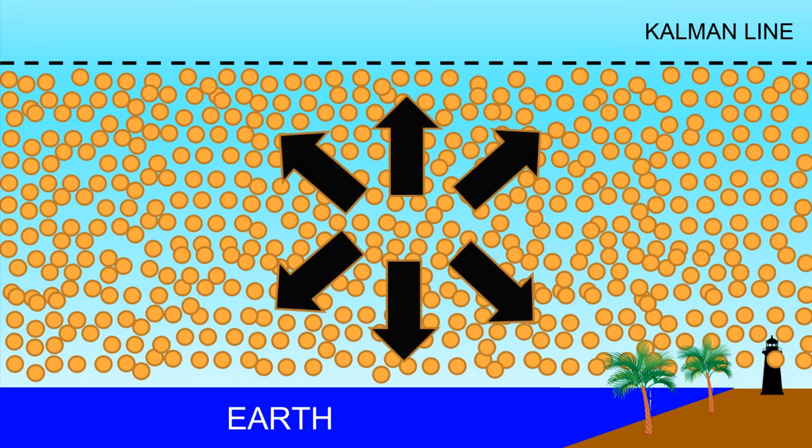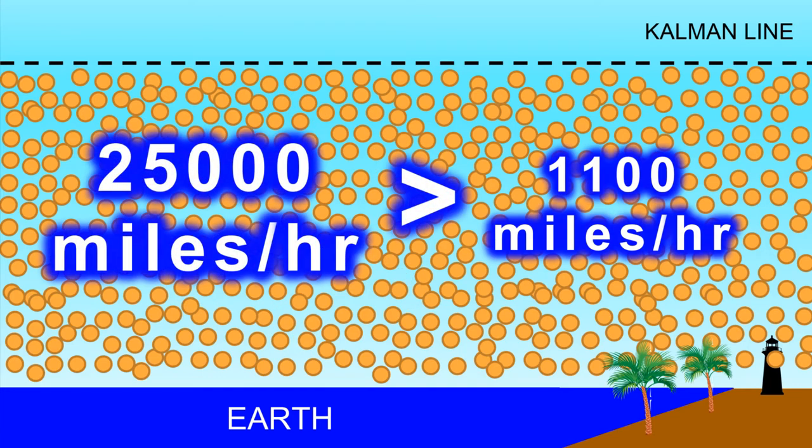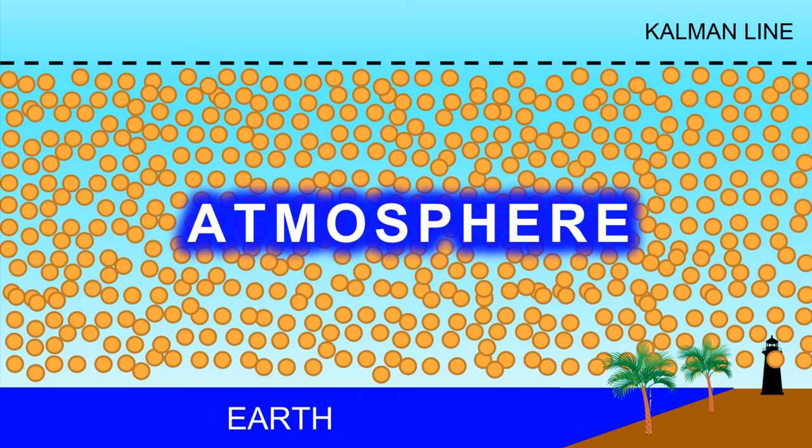But the average speed these air molecules move at is around 1,100 miles an hour approximately, which is much smaller than the escape velocity of the Earth. So these air molecules remain trapped due to the Earth's gravity. And this is why the Earth retains an atmosphere.